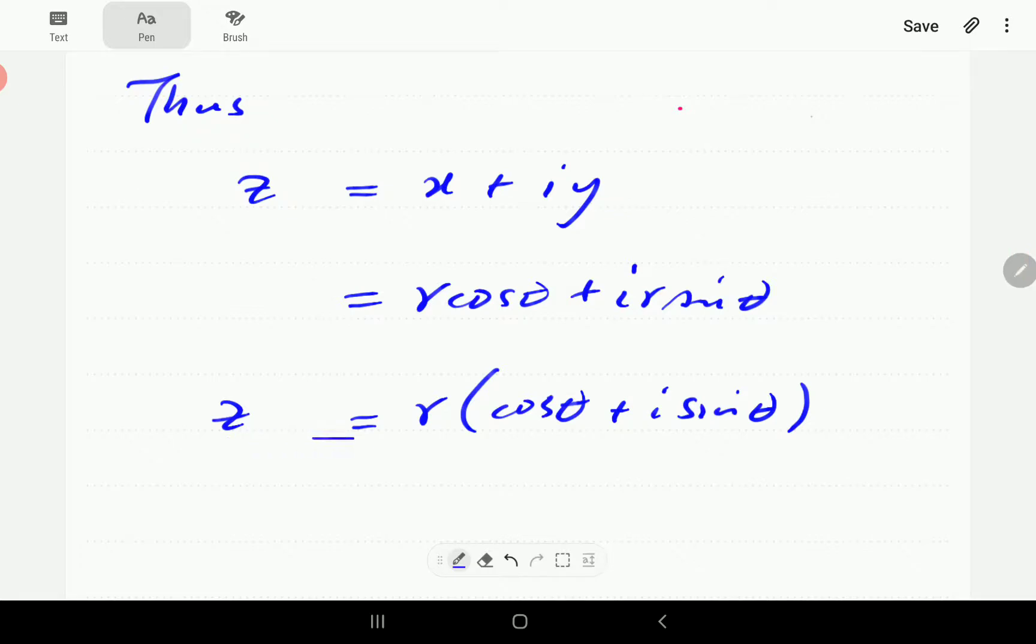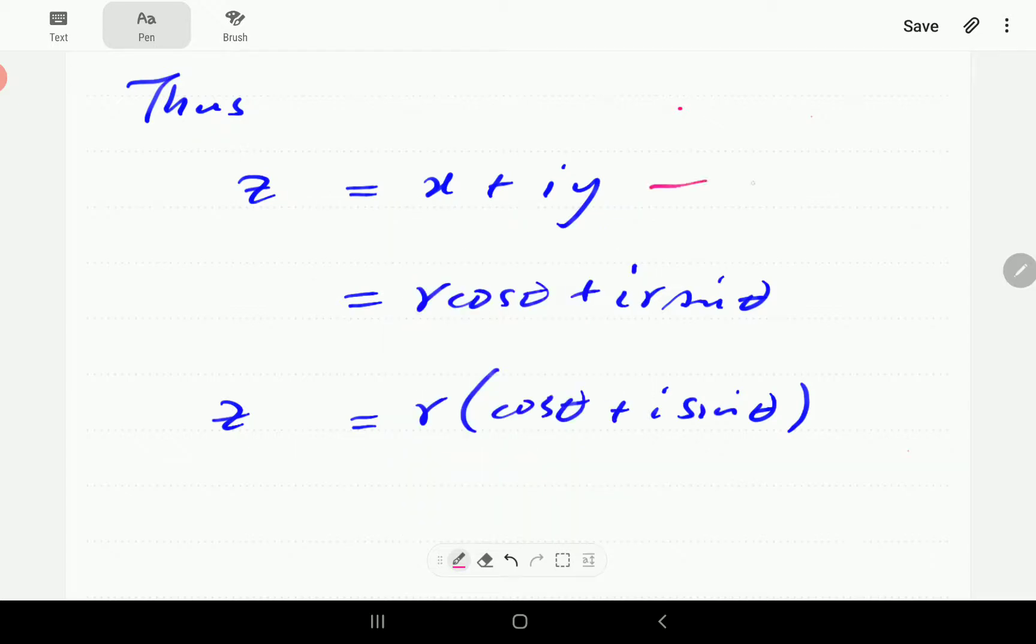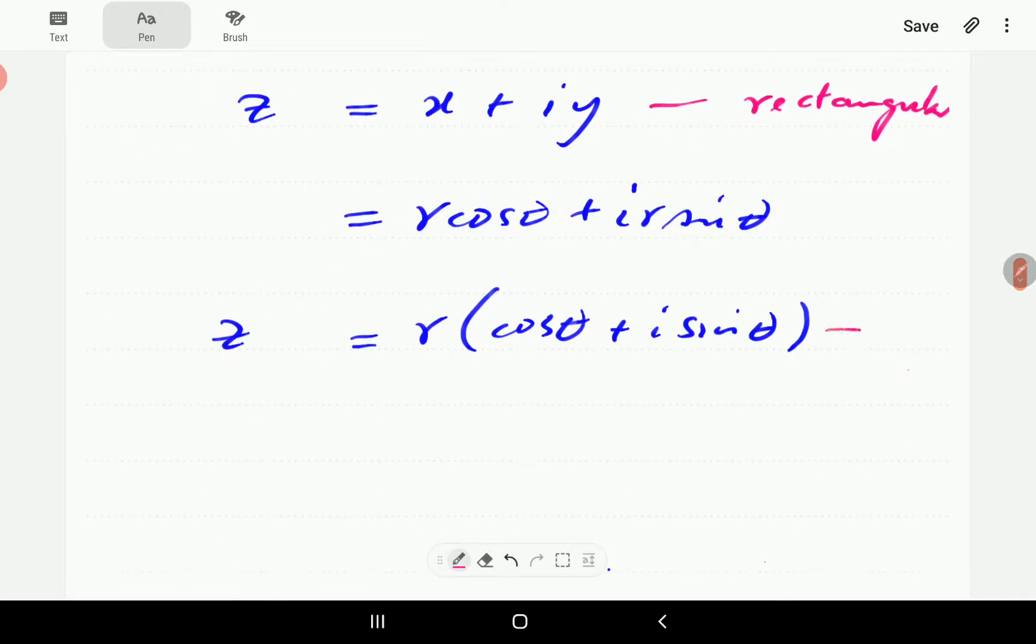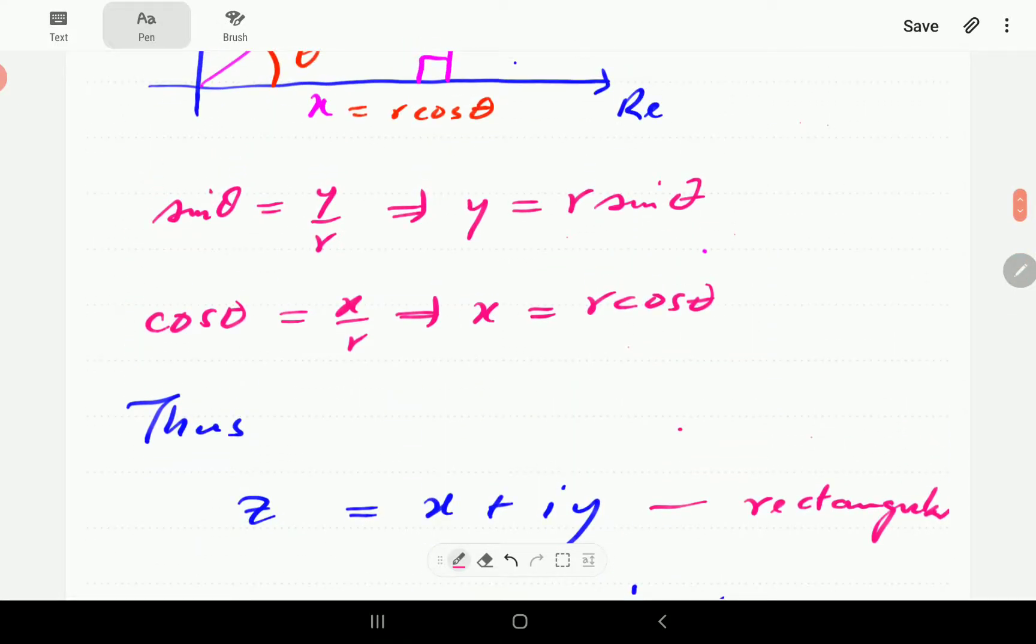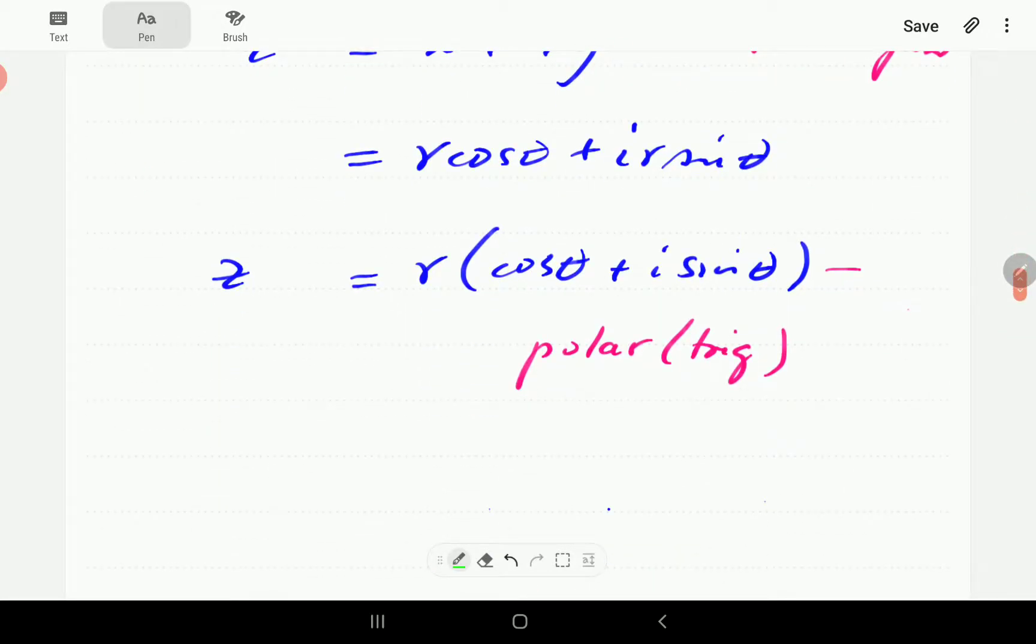x plus iy or z can be written in this form. The first form, this one here is called the rectangular form, because it's based on the rectangular coordinate system. The second form, this one here is called the polar form.